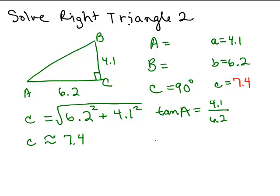That means that A is just the inverse tangent of that, so the inverse tangent of 4.1 over 6.2. You want to keep everything exact before you plug it into your calculator. This will give us an angle A, and if you want it in degrees, make sure that you've got your calculator set up in the degree mode.